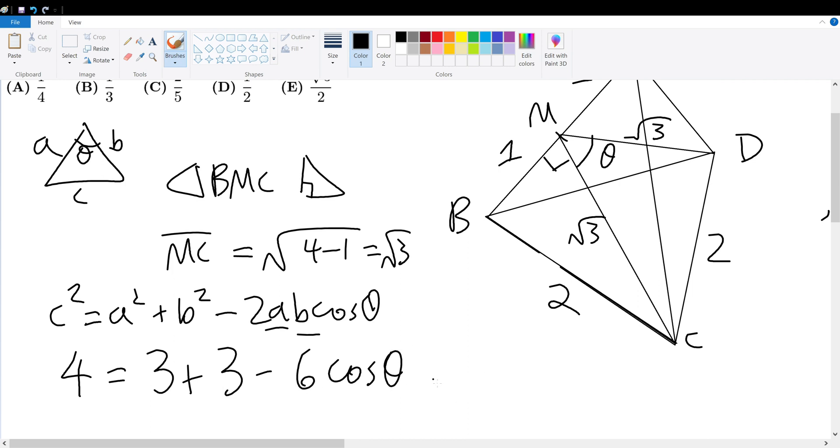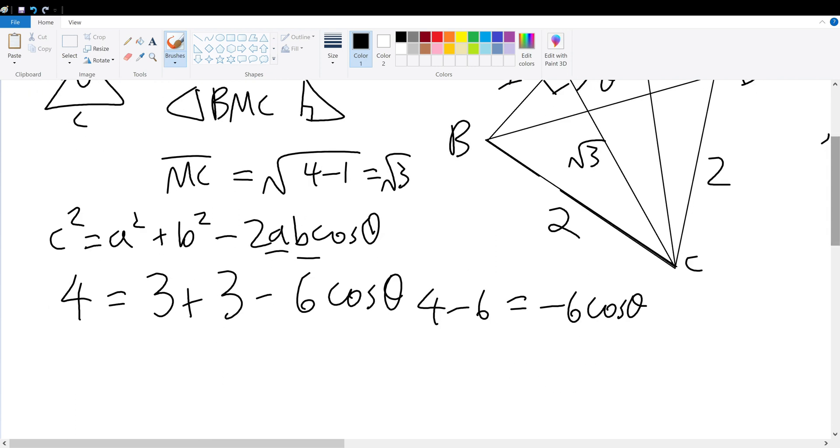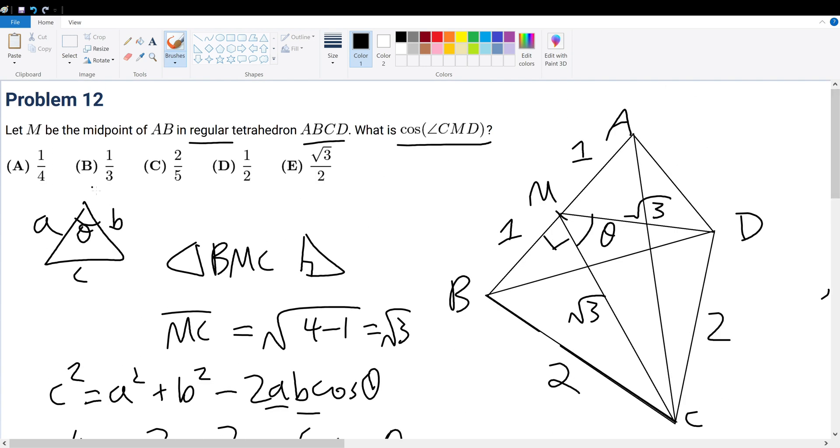Now with this, we can simplify to get 4 minus 6 is negative 6 cosine of theta. Well, we can see where this is headed. Because when we simplify, we'll get our answer. The cosine of theta would therefore be equal to negative 2 over negative 6. Therefore, this would be equal to 1/3, bringing you to answer choice B.